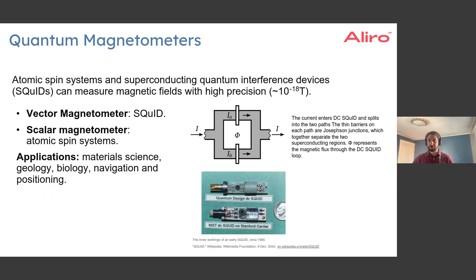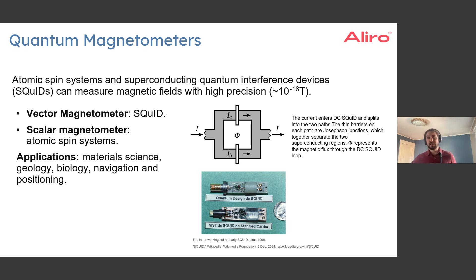Another example of a quantum system that measures using its quantum properties is a magnetometer. One classic example here is the SQUID — the superconducting quantum interference device. This is essentially a current loop that uses Josephson junctions to enforce the current through it.